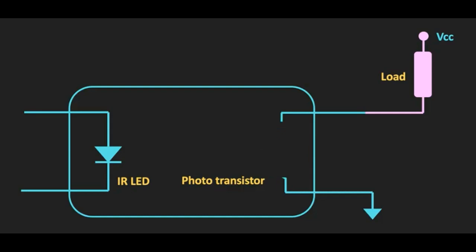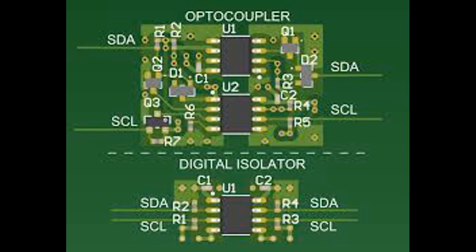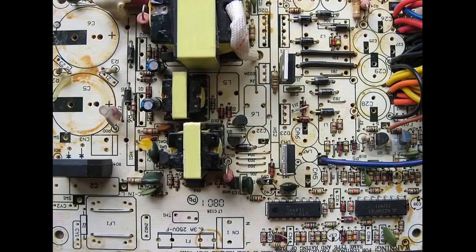Optocoupler is used to isolate the two electrical circuits. It prevents low voltage circuit from noise, ground loop and voltage spikes. Control high voltage circuit using digital logic or microcontroller.